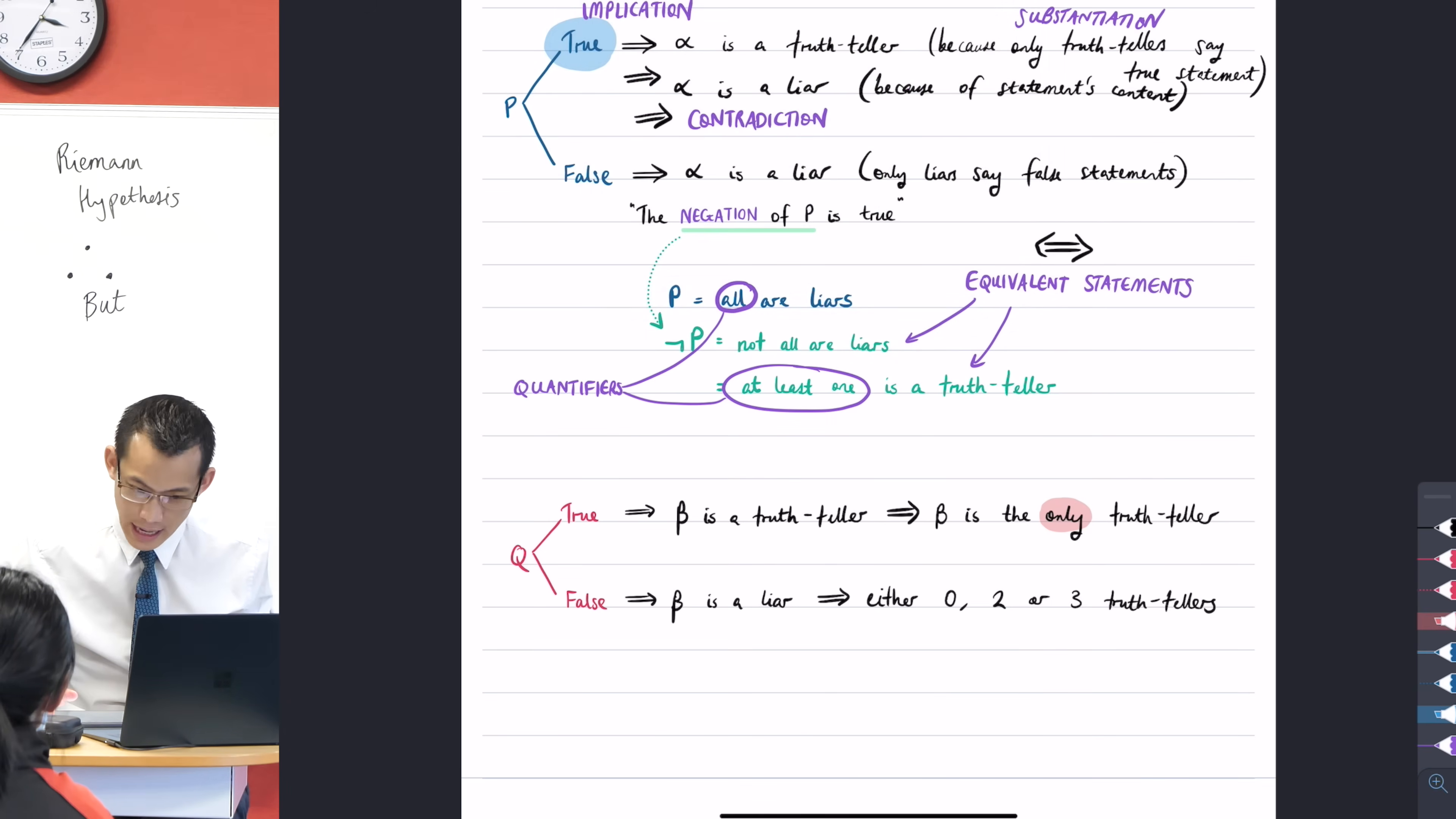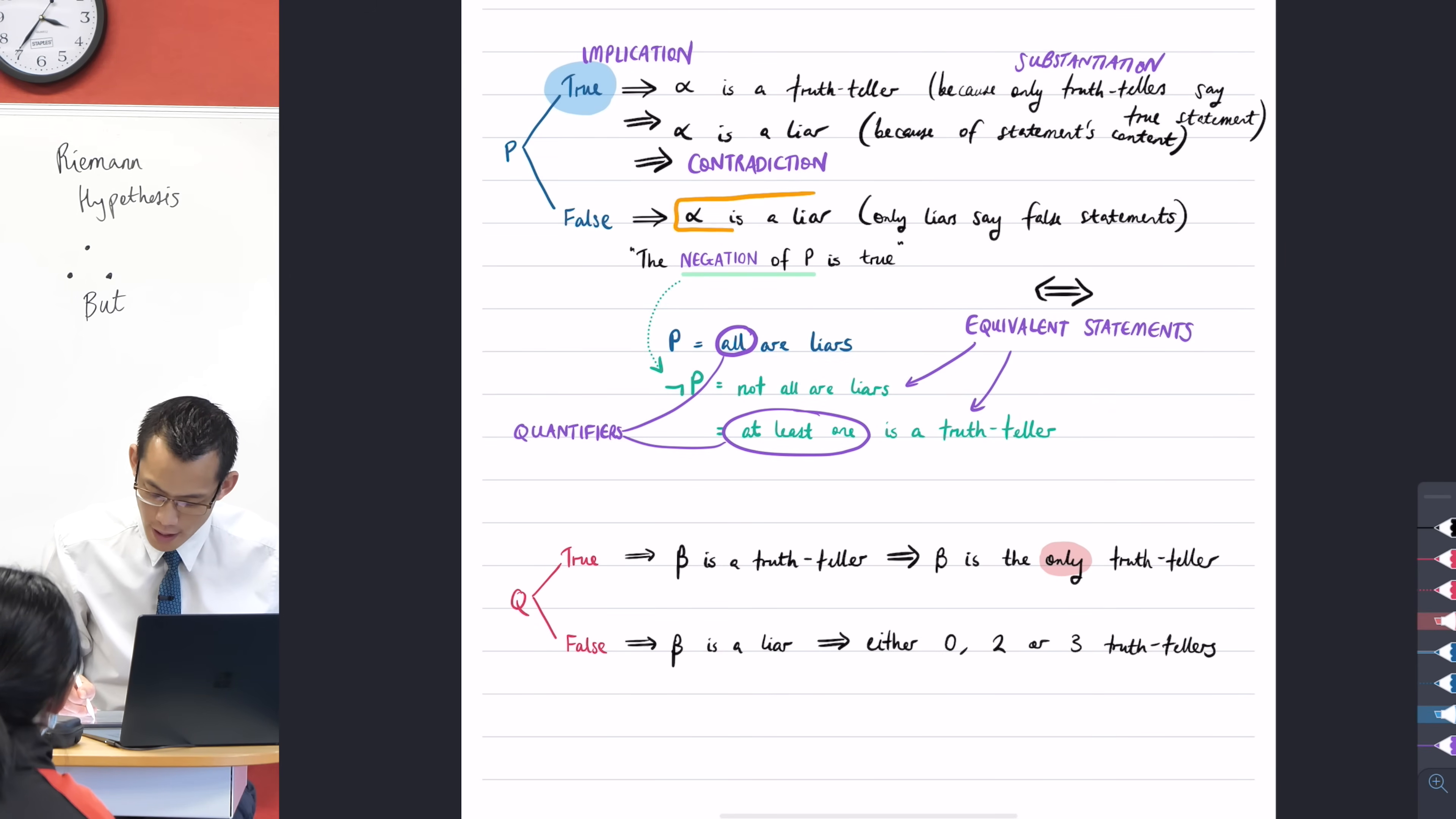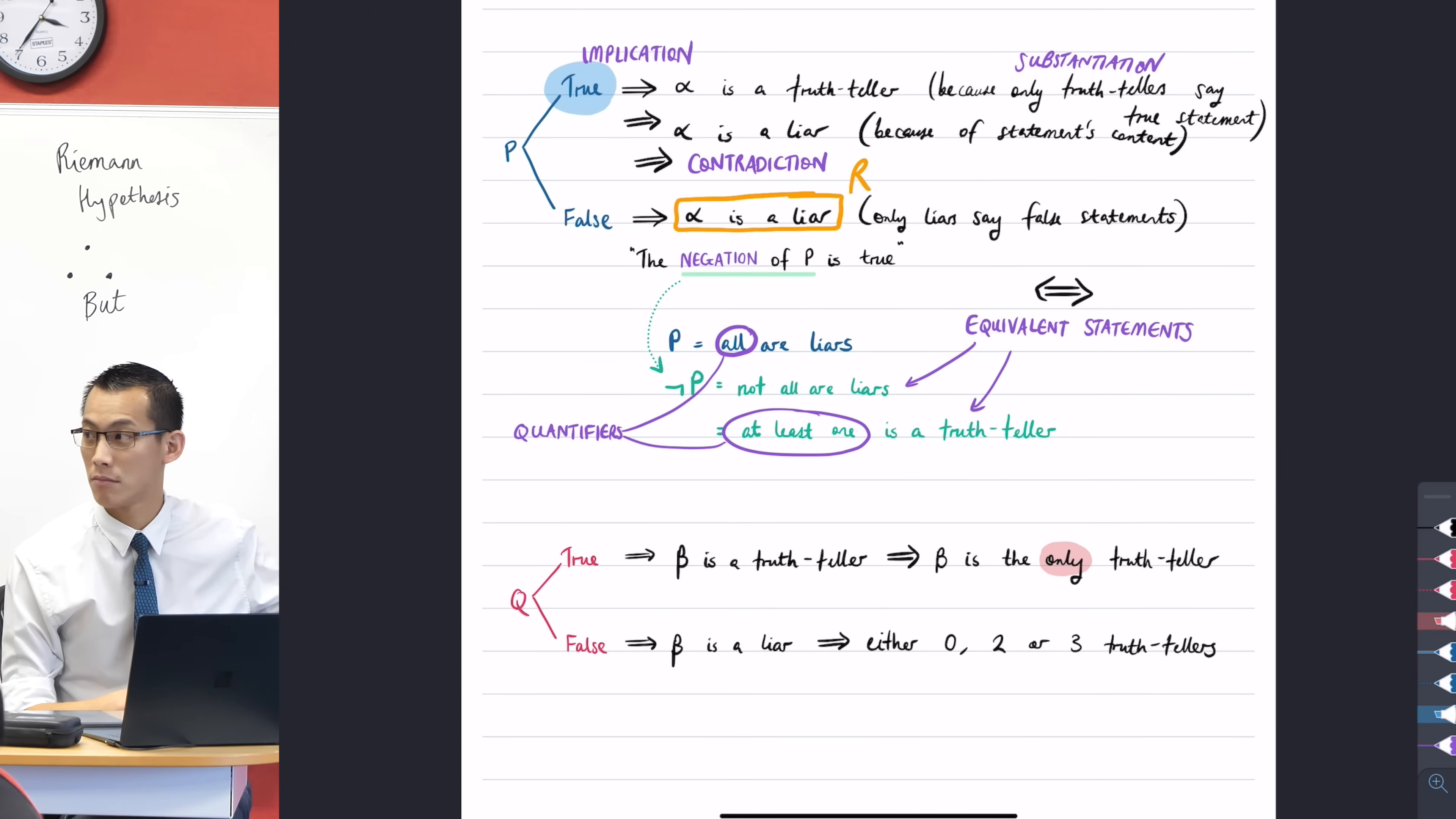So to do that, I need to, again, give some name to things. So let's have a look at this one up here. Alpha is a liar. We know that to be true. We've gone through some logic. So because I know that to be true, I'm going to give this statement another name. I've already used P and Q, so I'm going to call that one statement R.